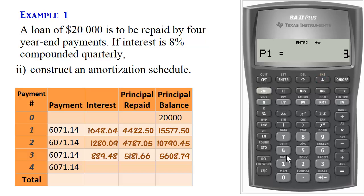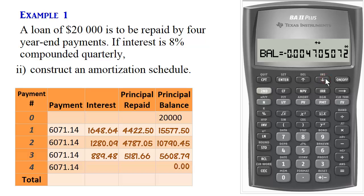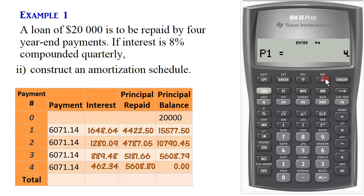Finally, we do the same thing for period four. We enter four for P1, press Enter, scroll down, enter four for P2, press Enter, and scroll down. The balance is zero, which means the loan has been paid off. We note that P1 represents the starting period and P2 represents the ending period. We then calculate the totals and we are done with this example.